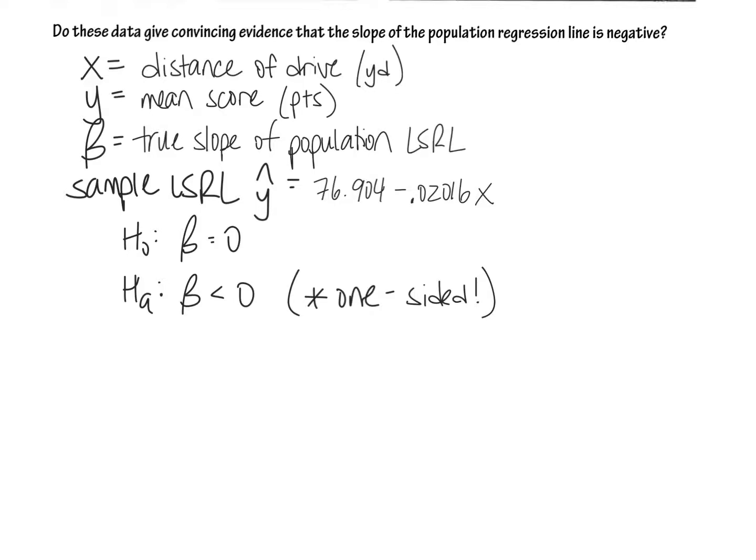However, how do we figure out what the Ha is in this case? Read the question really carefully. Do these data give convincing evidence that the slope is negative? And so that is why I have a less than zero here. Remember, that means we're going to be doing a one-sided. So if it wasn't negative or positive, that would mean we would have an alternate hypothesis where it's not equal to zero, and that would be a two-sided. Remember, that means you have to double your p-value. That's one of the most common mistakes that people make. In this case, we don't have to worry about it.